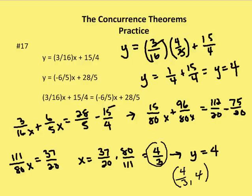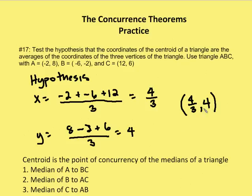Going back to determine whether that point matches our original calculation using the formula — and 4/3, 4 is indeed the same number we determined from the hypothesis. So in fact, a simpler way of finding the centroid is just to use the averaging formula rather than finding the intersection of the two medians. That's it for Otten Math. If you need more information on concurrence theorems, revisit the lesson or come back for the next edition.